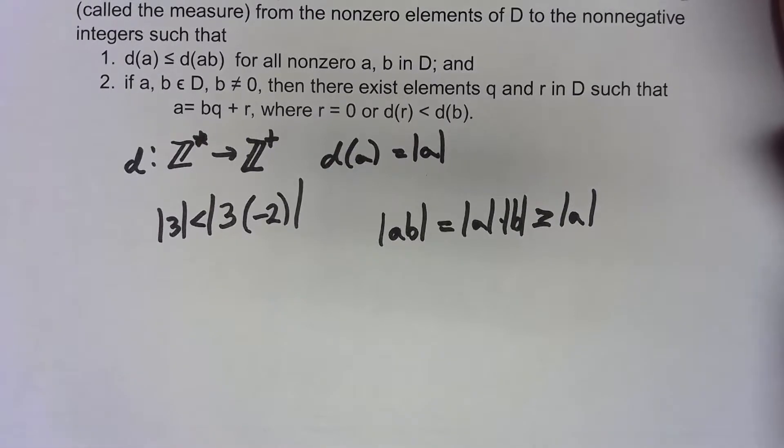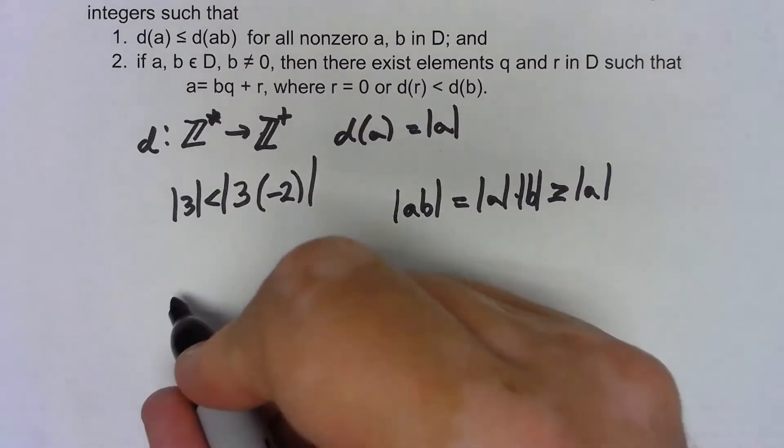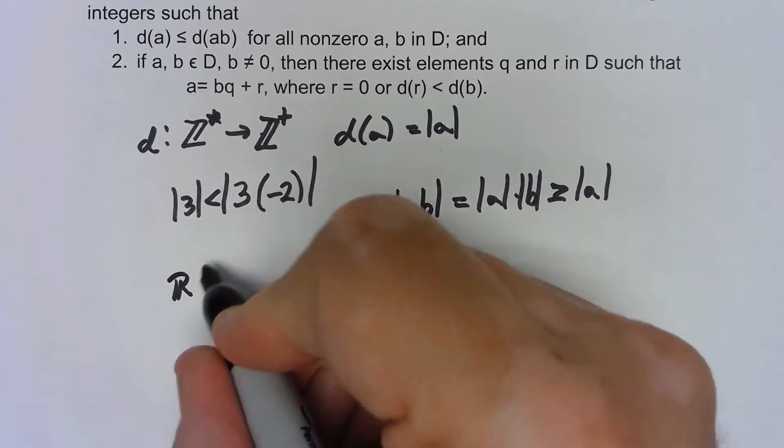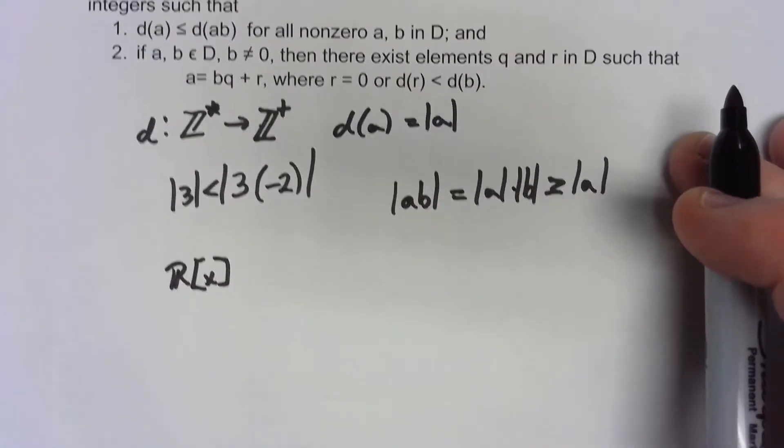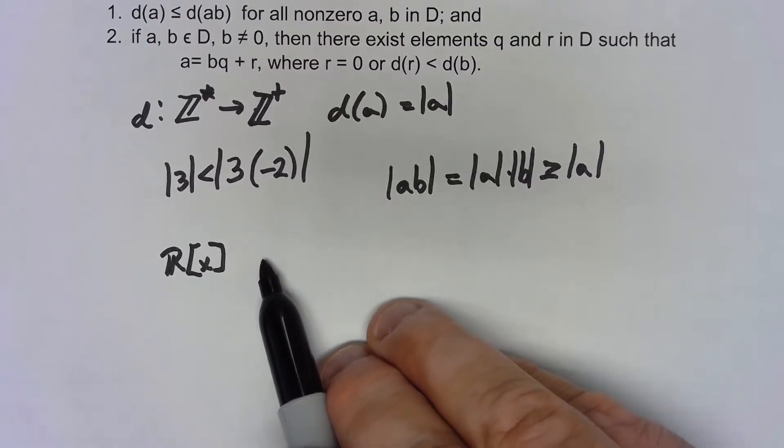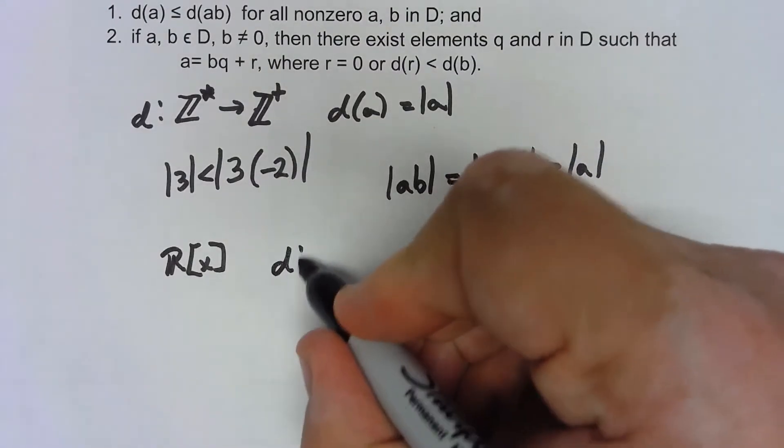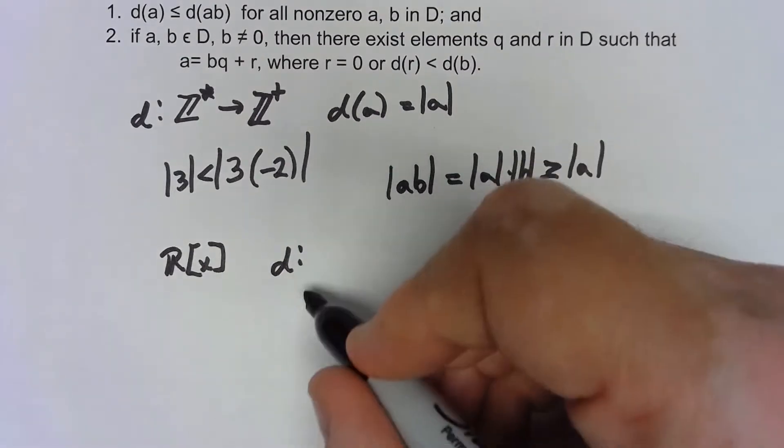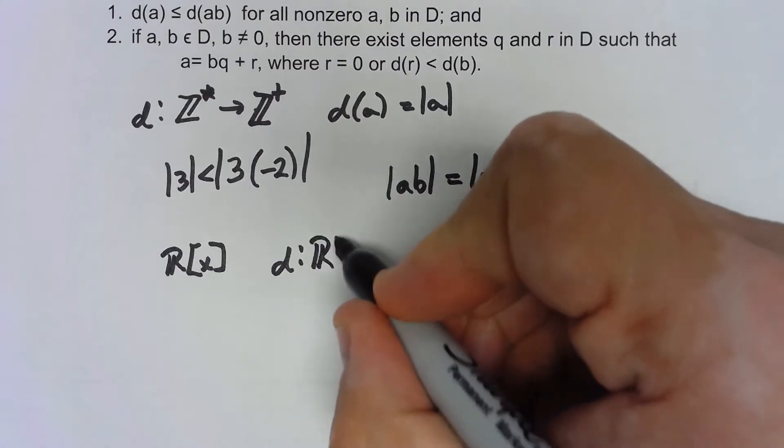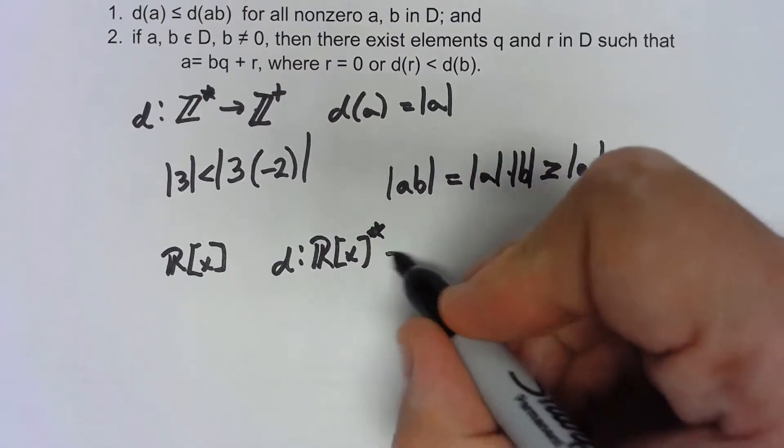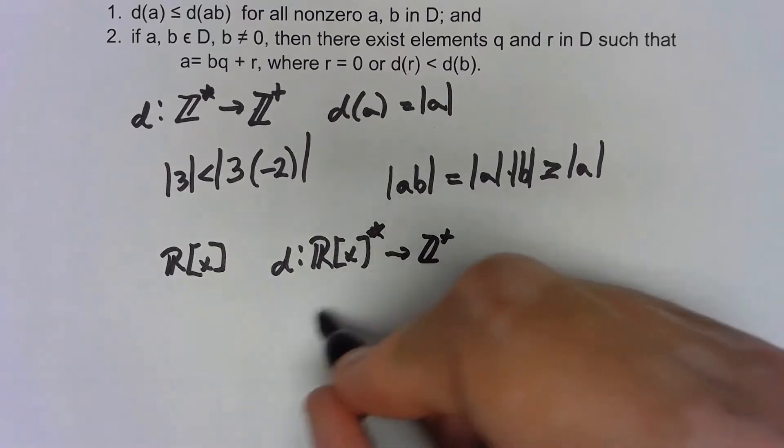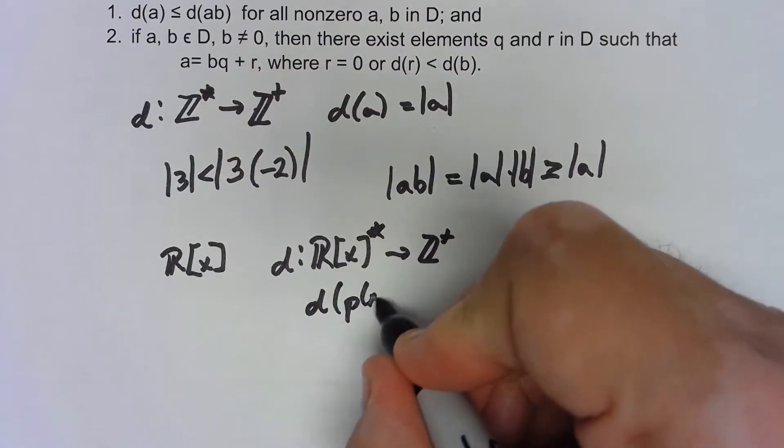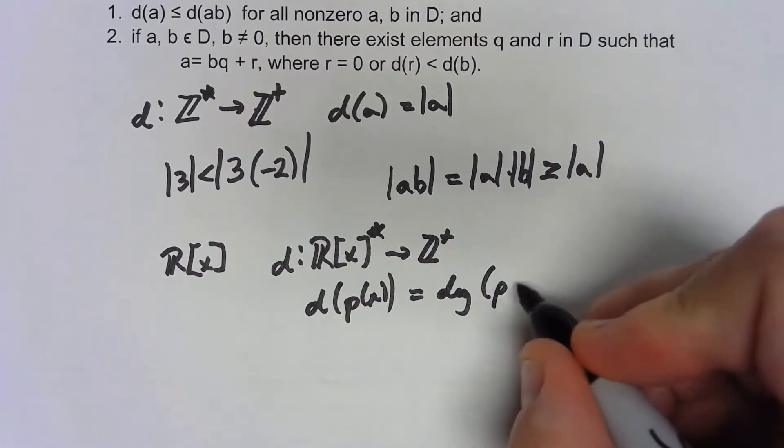Similarly if we had something like R[x], once again we're going to say my measure function going from the non-zero polynomials to non-negative integers, and it's going to be d of a polynomial is equal to the degree of that polynomial.